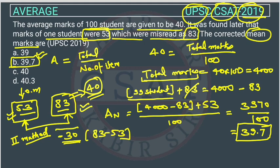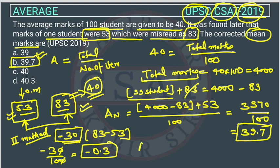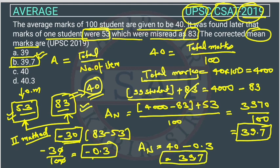This difference of 30 marks gets distributed over 100 students. Dividing by 100 gives minus 0.3. So the new corrected average equals the old average of 40 minus 0.3, which gives 39.7. From this shortcut method also, you get the same answer.